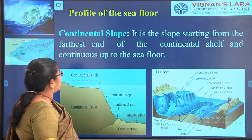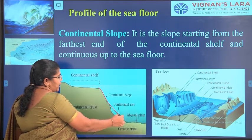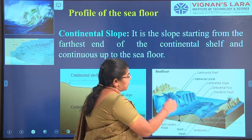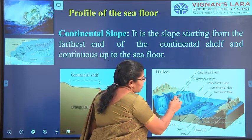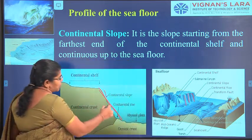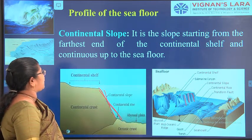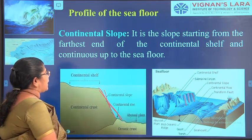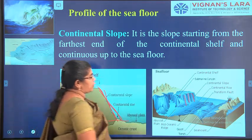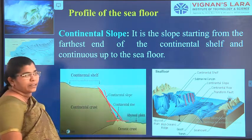The next zone is the continental slope. After the continental shelf there will be a slope — it may be a deep slope or a gentle slope, mostly a deep slope due to erosions. A continental slope is a slope starting from the farthest end of the continental shelf and continuing up to the sea floor.